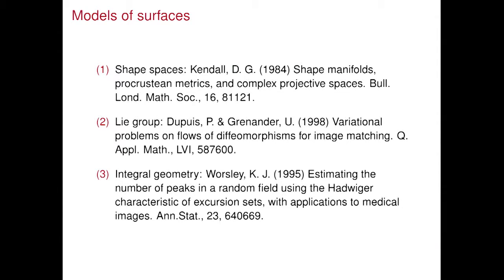There have been various ideas for thinking about models of shapes. A very classic one goes back to Kendall and shape statistics — you take a shape, put down landmark points, put down a perpendicular plane around each, stack them as a subspace, and compute distances modulo rotations, translations, and scalings. That's a Procrustes distance. There's also beautiful theory using Lie groups and variational methods for image matching, from the Grenander school. Very close to what I'll discuss are the ideas by Keith Worsley, using integral geometry to think about shapes in MRI images.